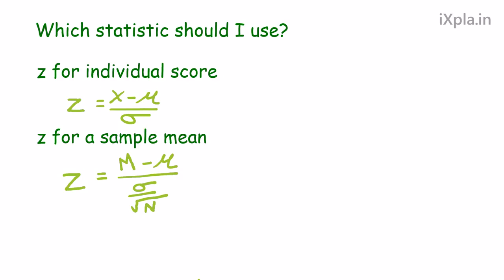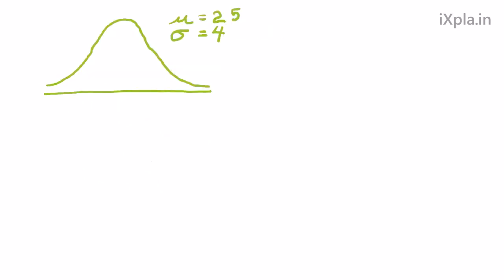And you'll get to see some examples in the activity today. So that's a skill that you want to try and hone in on. Now, here what we have is a distribution of scores from a population with known parameters. A mean of 25 and a standard deviation of 4. And we're going to ask this question: What's the probability of sampling an individual score, a score of 20 or lower?